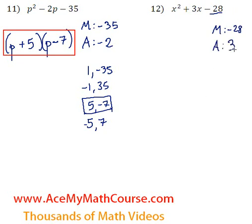Okay, so what two numbers multiply to negative 28? Negative 1 and 28, 1 and negative 28, 2 and negative 14, negative 2 and 14. So far, no luck.